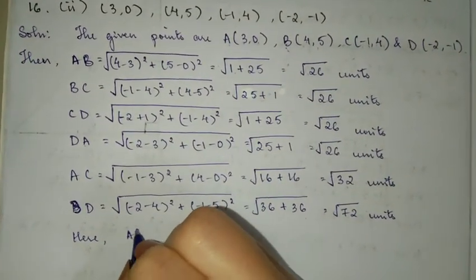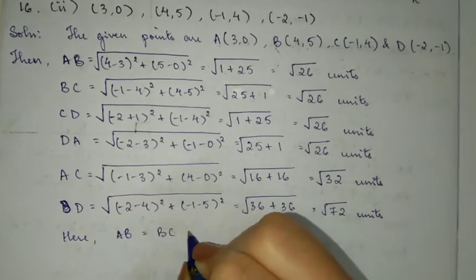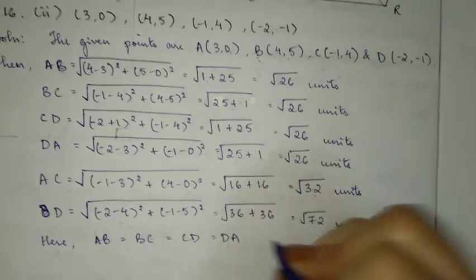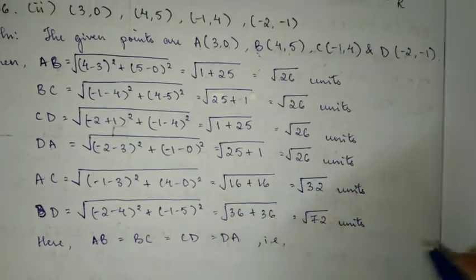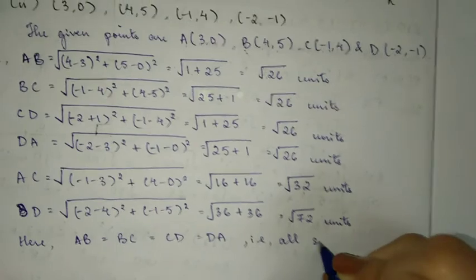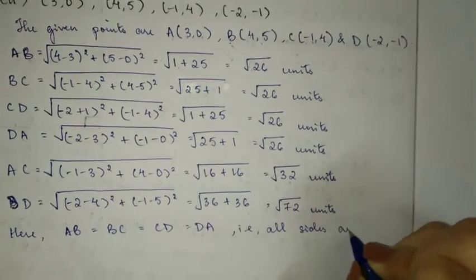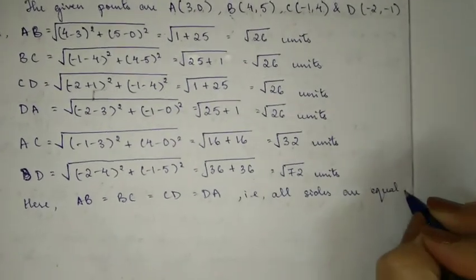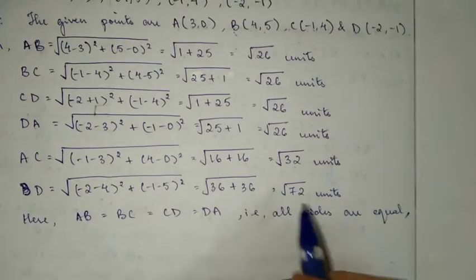Here, AB is equal to BC, which is equal to CD, which is equal to DA. So all sides are equal. All sides are equal, that is all sides are equal.